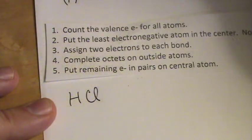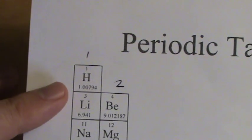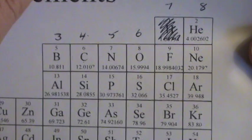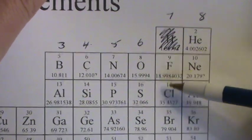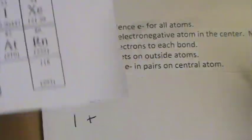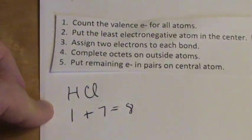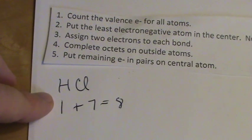If we look at our periodic table, we can see that H is in group 1, so it has one valence electron, and Cl is in group 7, or also called group 17, so it has 7 valence electrons. So I have a total of 8 valence electrons to work with.